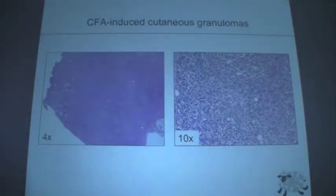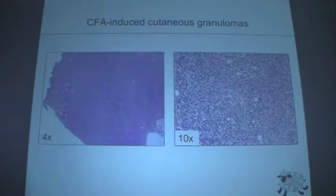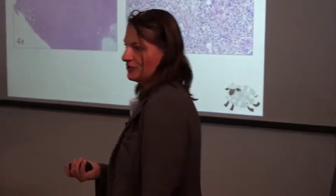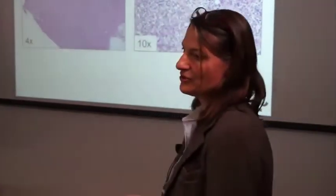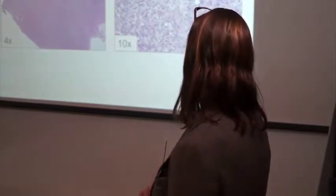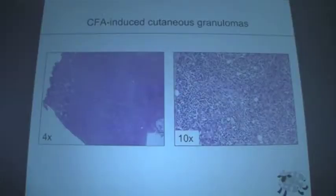Here's the granuloma — you can see the epidermis and the inflammation. At higher magnification, you see mononuclear cells, mostly macrophages and lymphocytes in the tissue. So why sheep? Because in sheep you can actually cannulate the lymphatics that drain the site and look at the cells — the sheep is large enough and cooperative enough to do that.